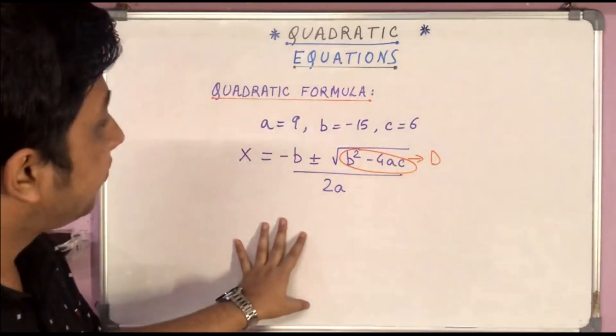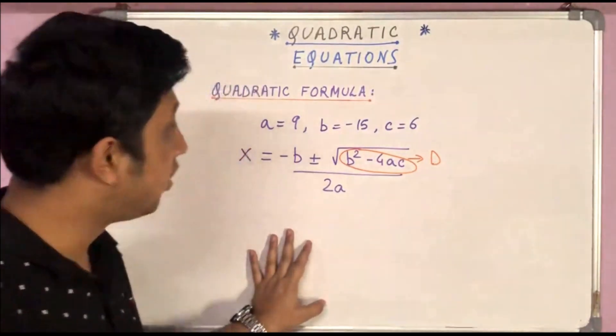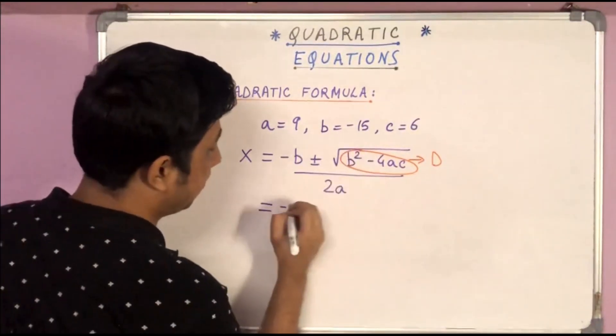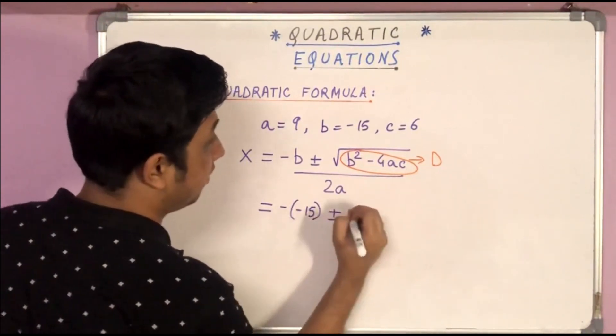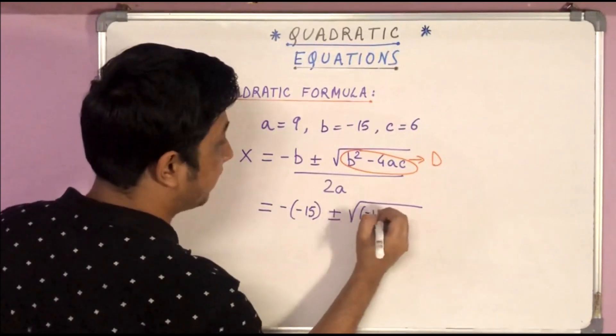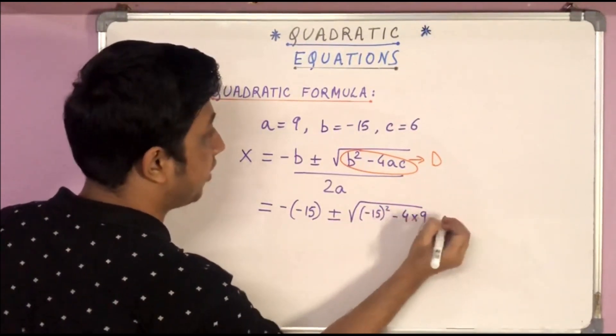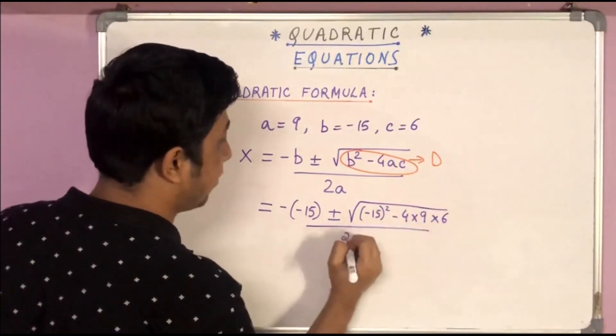Now let's continue solving this and find out the roots of the equation. Let's put the values. b's value is -15. When I put b², that is (-15)² minus 4ac: 4 × 9 × 6, divided by 2a, that is 2 × 9.